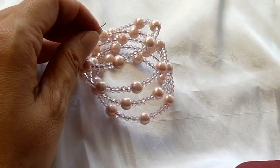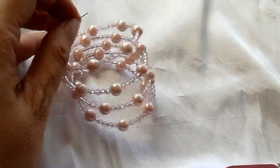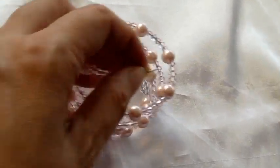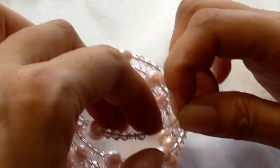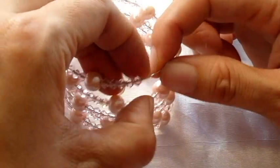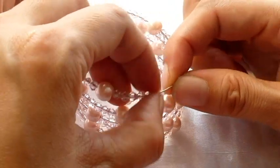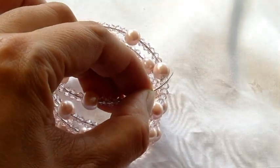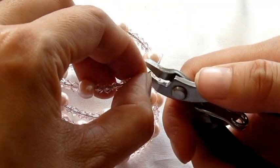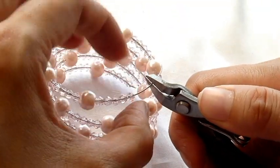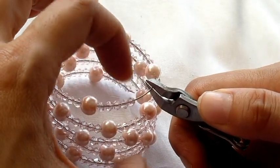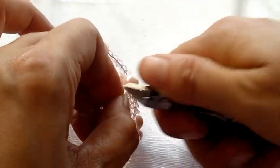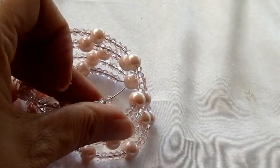I have pre-prepared this memory wire bracelet and now I'm ready to make another loop at the end of the wire. Leave about 0.6 centimeter of wire here from the last bead and cut off the excess wire using your pliers.